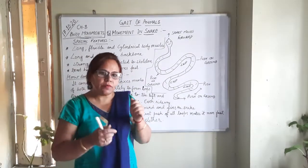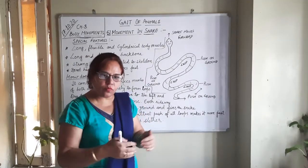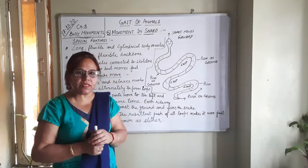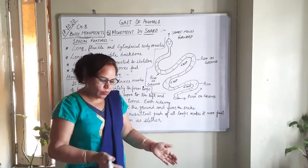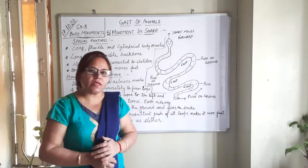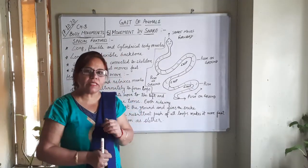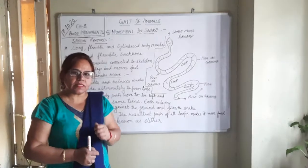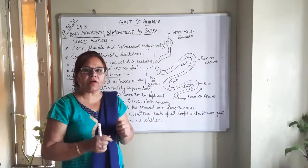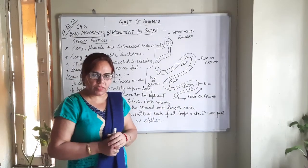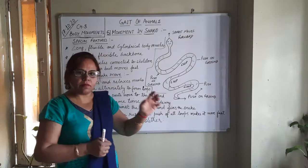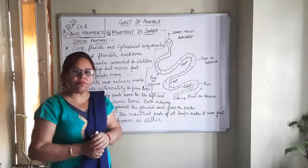Snakes usually move very fast on a rough and coarse surface. If you observe them on a very plain and smooth surface, they are not able to move easily. The reason is that their body muscles are not able to make a fine grip on smooth ground, which is why they move better on rough and coarse surfaces.